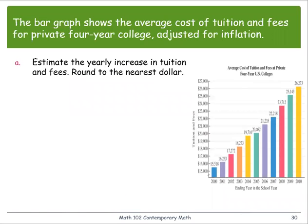For this example, the bar graph shows the average cost of tuition and fees for private four-year college adjusted for inflation. Part A: estimate the yearly increase in tuition and fees, then round to the nearest dollar.